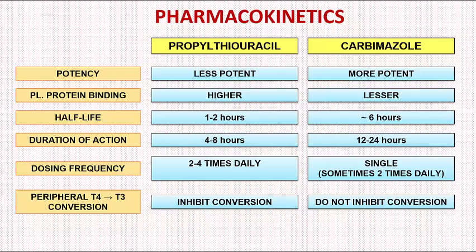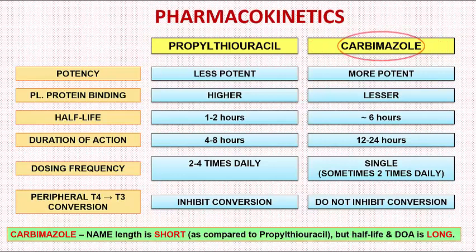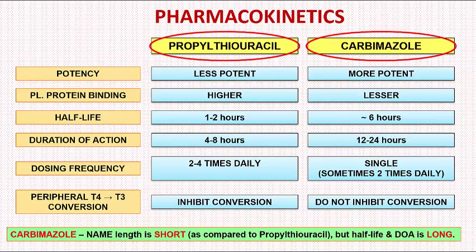To remember these differences, look at the drug names. Carbamazole has a shorter name length compared to propylthiouracil which has a longer name. Although the name length of carbamazole is short, the half-life and duration of action are long. Just imagine carbamazole as a short man with a small organ, but it is more potent, more powerful and longer acting compared to the long man propylthiouracil. Also, looking at the orange bars on the left side of the slide, all titles starting with the letter P — plasma protein binding and peripheral conversion — occur with propylthiouracil, which also starts with P. So P goes with P, except for potency.